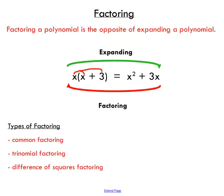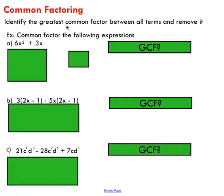In this video we're going to be talking about common factoring. The instructions say: identify the greatest common factor between all terms and remove it — that's what you're doing in order to common factor. We remove by dividing. Let's look at this first example: 6x squared plus 3x.